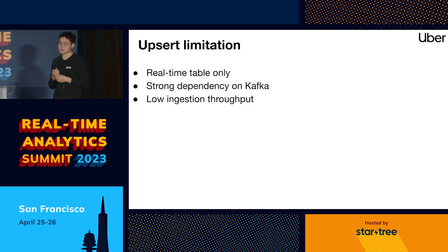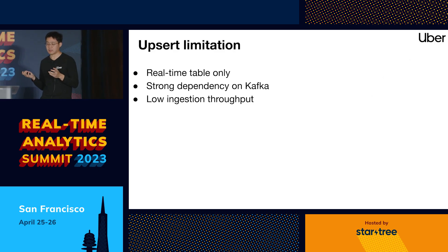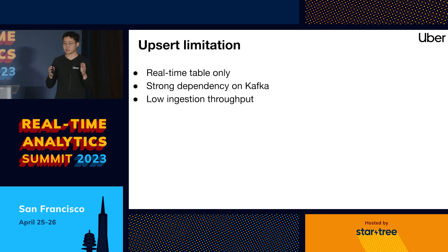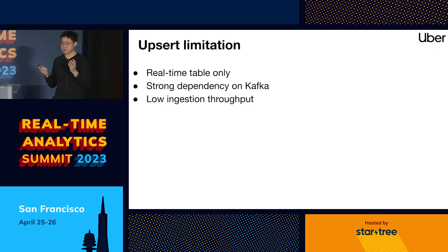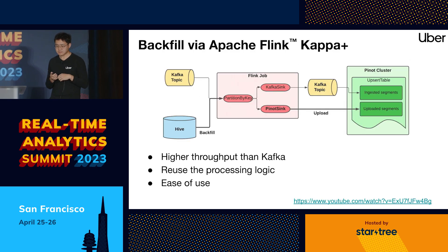This is actually a problem for upsert because upsert tables are real-time only with a strong dependency on Kafka. Kafka is known for lower throughput than batch processing: for example, processing one hour of data using Kafka may take one hour, while using Hive it might only take one minute. That's because file-based batch processing is much more efficient and has much higher throughput.